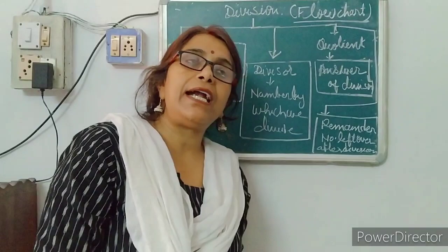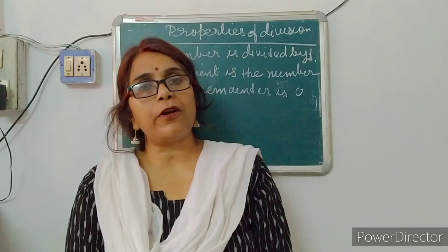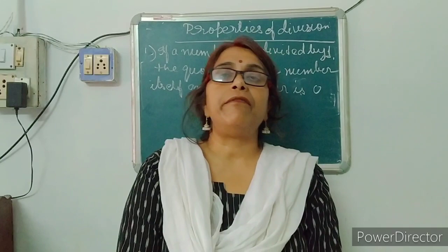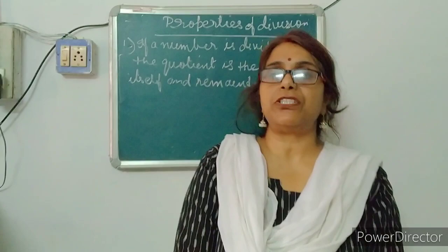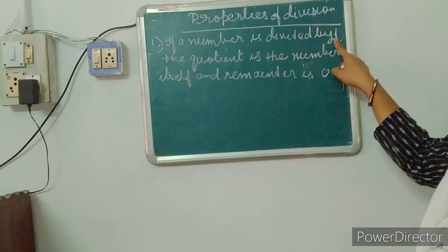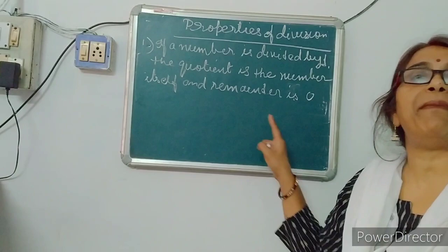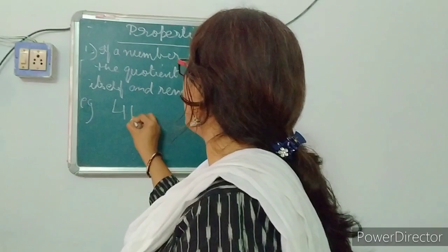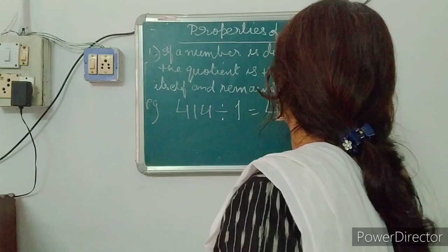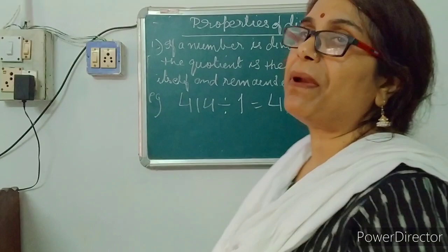All of you, draw this flowchart in the classwork copy. After that, I am going to explain the properties of division. In the property of division, the first property is: if you divide a number by 1, we will get the number itself as the quotient and the remainder is 0. If a number is divided by 1, the quotient is the number itself and remainder is 0.